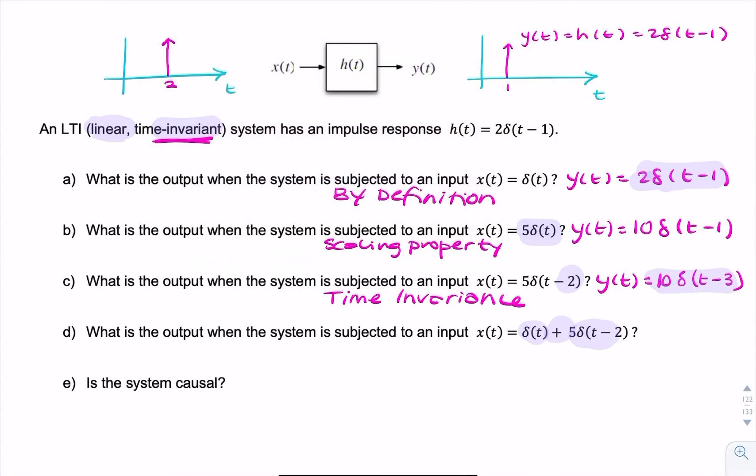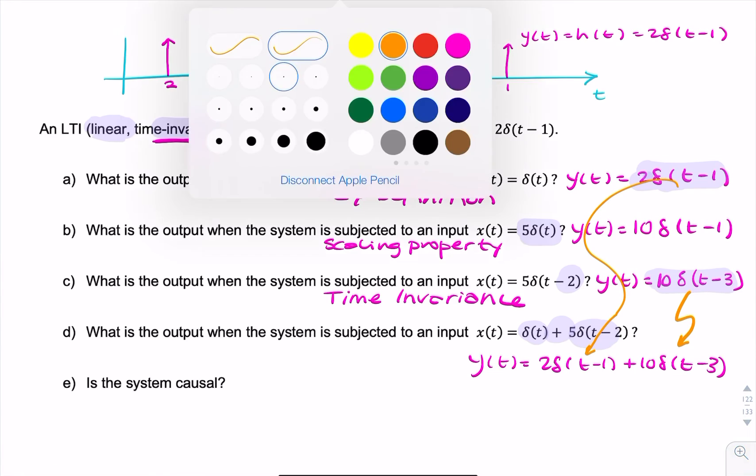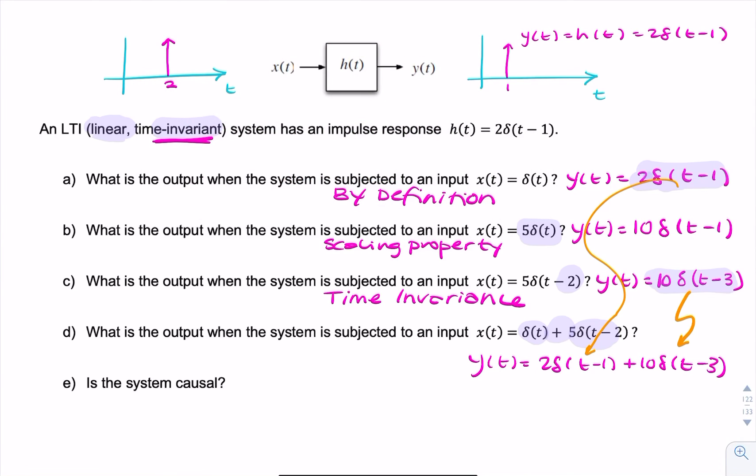So the output here is the sum of the two outputs. I'll just make that clear, that I'm getting this from there, and this from there. And why can I do that? It's because of linearity.